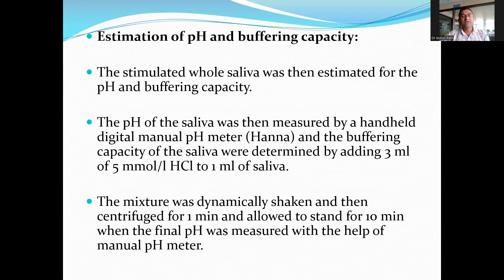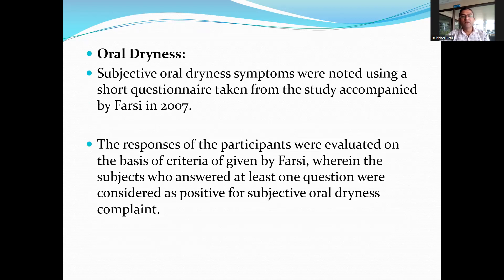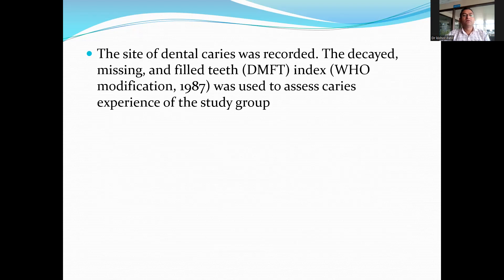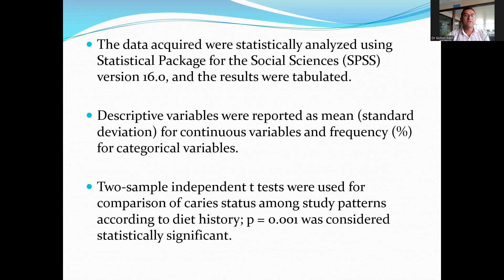For salivary pH and buffering capacity, the pH of the saliva was measured by a handheld digital pH meter. The buffering capacity was determined by adding 3 ml of HCl to 1 ml of saliva. The mixture was dynamically shaken, then centrifuged for 1 minute, allowed to stand for 10 minutes, and the final pH was measured with a pH meter. Dental caries sites were recorded using the DMFT index based on WHO 1987 criteria.